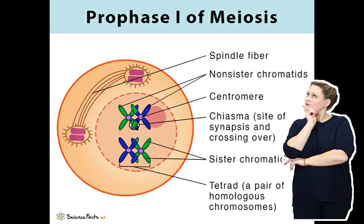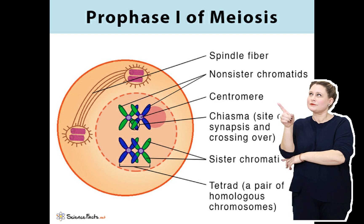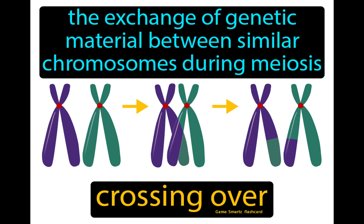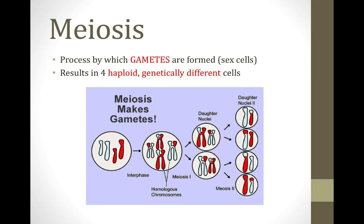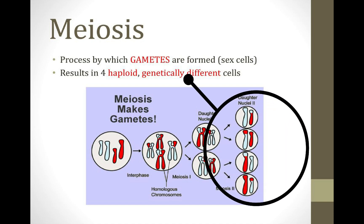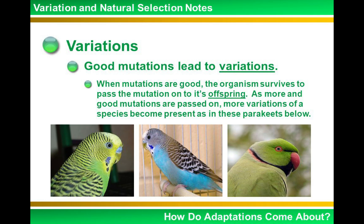Do you remember what happens during prophase 1 of meiosis? During prophase 1 of meiosis, there is an exchange of chromatid segments between the homologous chromosomes. And when meiosis is complete, new combinations of genetic material result in the gametes, making them different from each other. That is how crossing over contributes to variation.